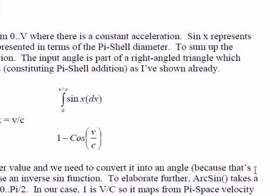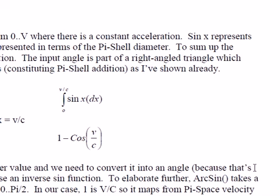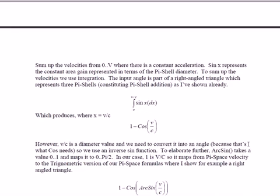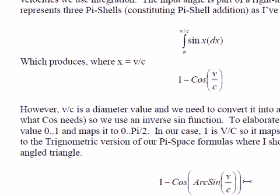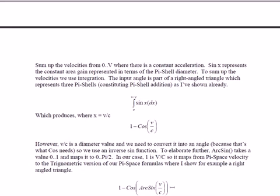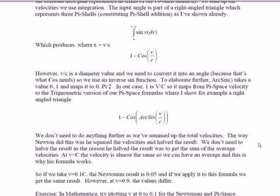The issue is that when you travel from zero to the speed of light using cosine and arc sine, you need to use the arc sine. The reason you need the arc sine is that it takes a value from zero to one and maps it to zero to pi over two. In our case, one is V over C, so it maps from pi space velocity to the trigonometric version of our pi space formulas. The actual value is one minus the cosine of arc sine V over C. The original one was just one minus cos(V/C), but if you convert velocity into pi space and put it into this formula, unity is arc sine because V over C maps to zero to pi over two as opposed to zero to one.